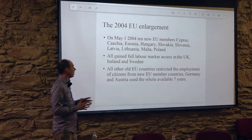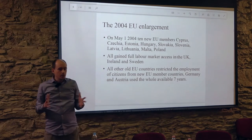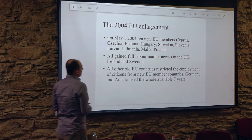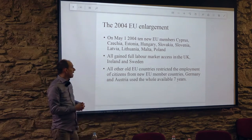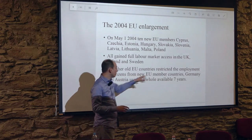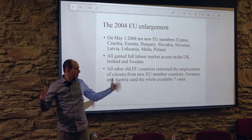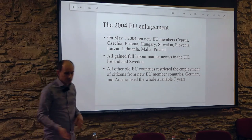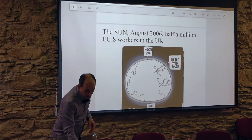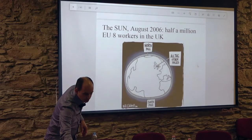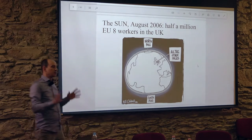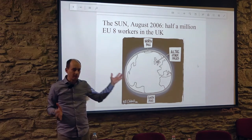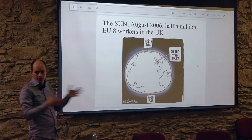After the 2004 enlargement, there was another round of EU enlargement in 2007, which included Bulgaria and Romania. In this case, the UK imposed a seven-year transition period. The prediction of 5,000 to 13,000 people arriving annually received a lot of laughs when the first actual figures were published two years later.